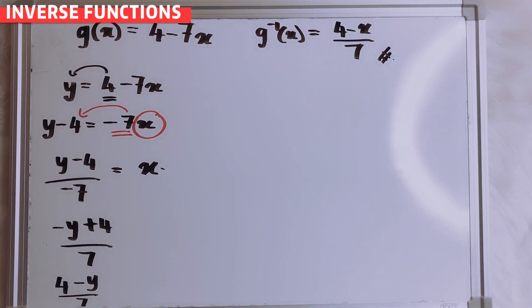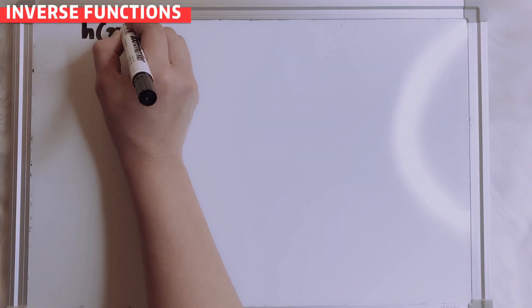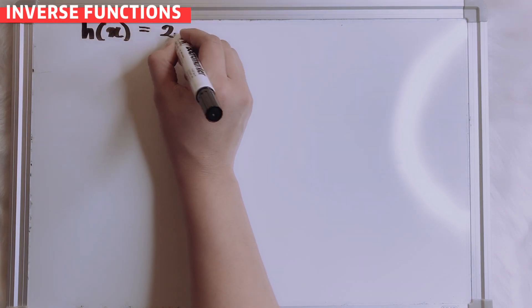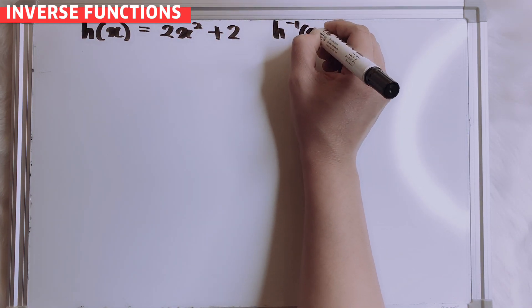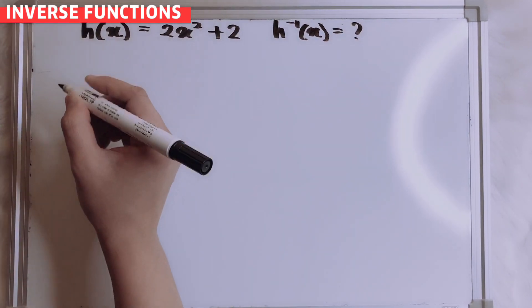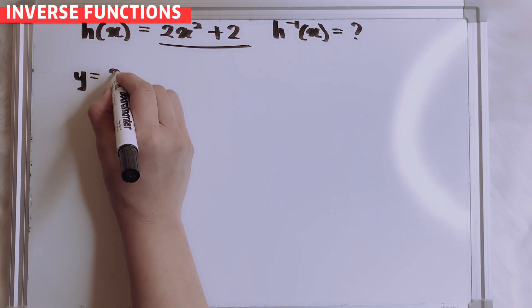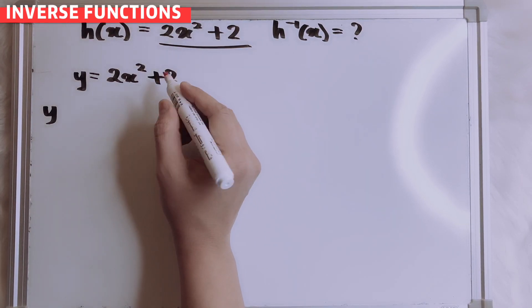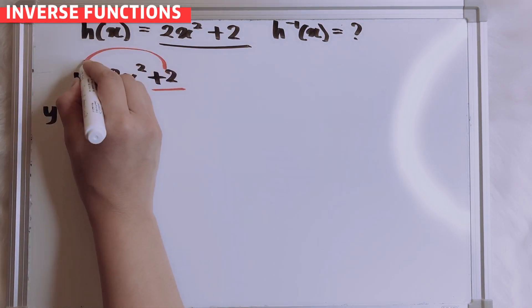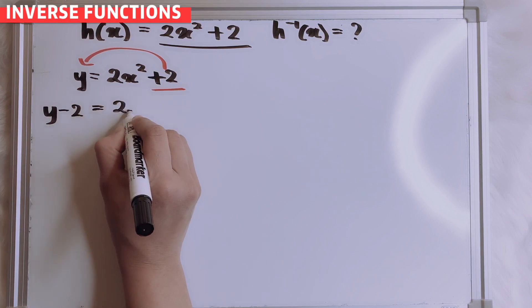Okay, I want to try one more. Let's say I give you h(x) equals to 2x squared plus 2. So what is our h inverse? So you put here y equals to 2x squared plus 2. Now, I want to transfer plus 2 — I want to bring to this side. So plus 2 opposite is minus 2, equals to 2x squared.